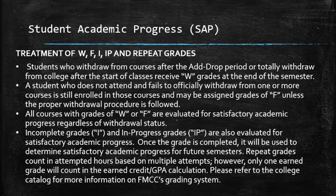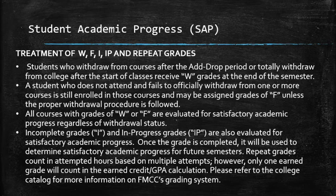All courses with grades of W or F are evaluated for satisfactory academic progress regardless of withdrawal status. Incomplete grades (I) and in-progress grades (IP) are also evaluated for satisfactory academic progress. Once the grade is completed, it'll be used to determine satisfactory academic progress for future semesters. Repeat grades count in attempted hours based on multiple attempts; however, only one grade earned will count in the earned credit GPA calculation. It's important to note that incomplete grades are calculated as a grade of F for the purposes of satisfactory academic progress.